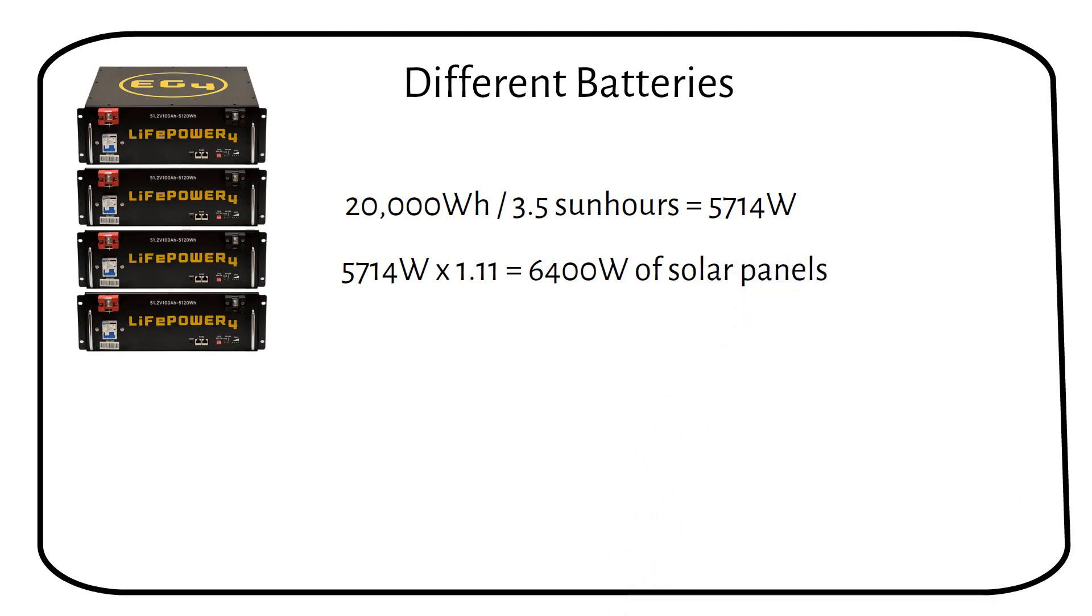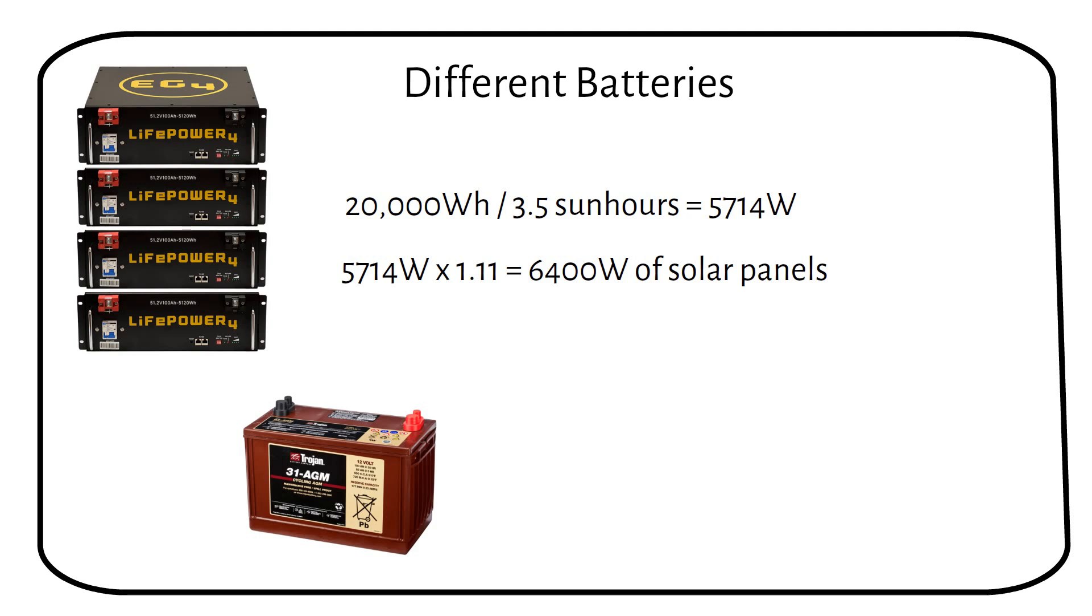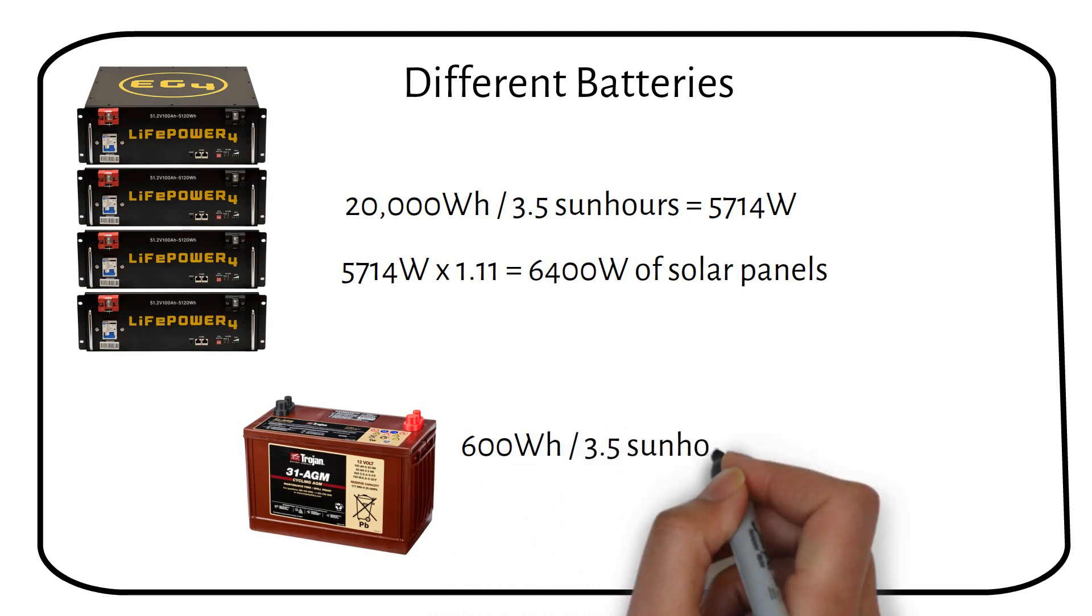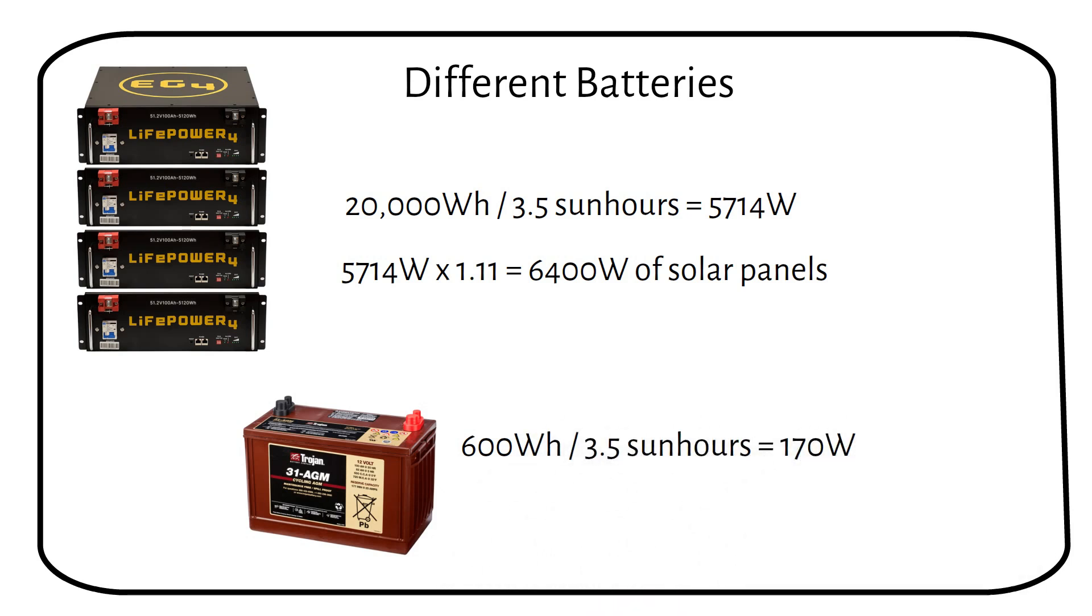Now let's do the calculation for a 12 volt 100 amp hour lead acid battery. As we already saw in step 1, you can only use 50% of a lead acid battery's capacity, which gives us 600 watt hours. 600 watt hours divided by 3.5 sun hours equals 170 watts.